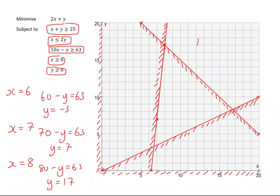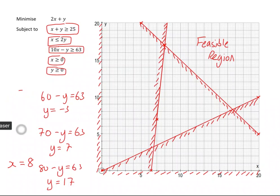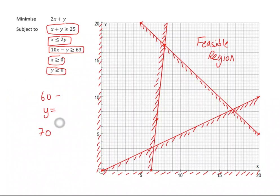We now have our feasible region. It's looking like the x greater than or equal to 0 and y greater than or equal to 0 constraints were actually redundant — they didn't add anything at all. The next thing is we want to minimize 2x plus y, and to do this we want to work out the two corners of our feasible region.